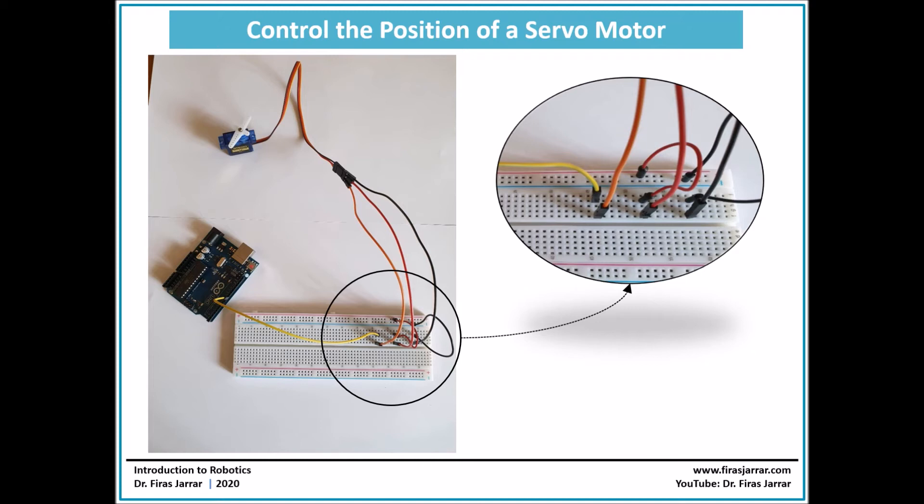Then we have the orange wire here which corresponds to the signal wire. We have it on this row, and then again from any other hole in the same row we're going to have another wire that goes all the way towards the microcontroller to pin number nine. So we'll have from the microcontroller the signal sent through here, through the breadboard, and then directly back to the servo motor to control the angular position of the shaft of the motor.